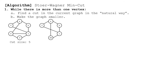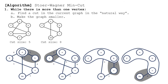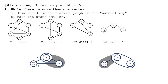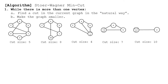Now let's see the iterations in action. We already saw what happened during the first iteration; here's what happens in subsequent iterations. At the end of each iteration we store the size of the cut, and the minimum of all of these is the weight of the min cut in the graph.